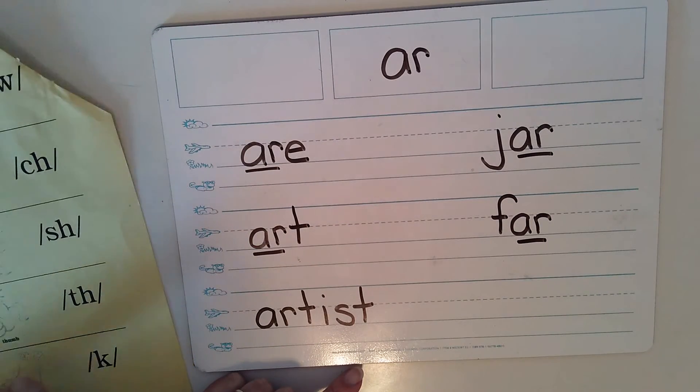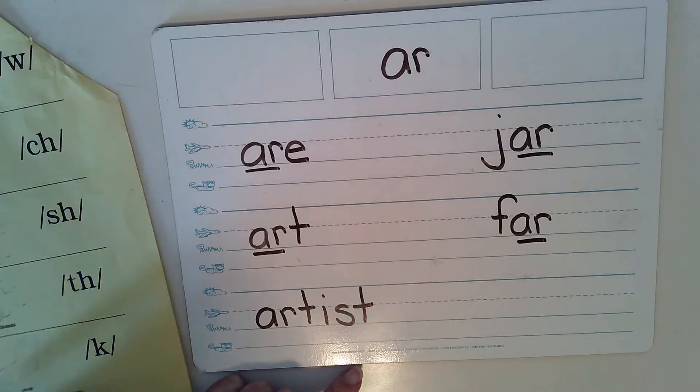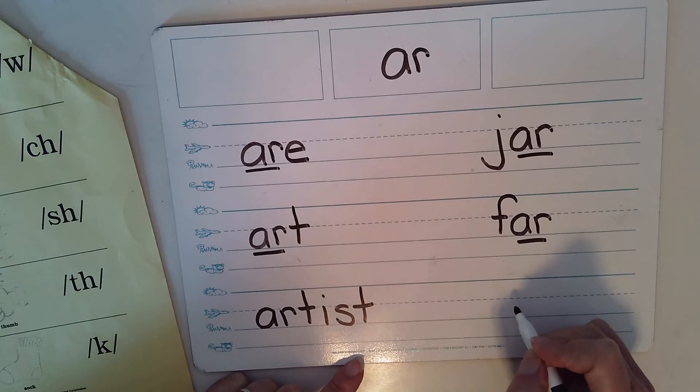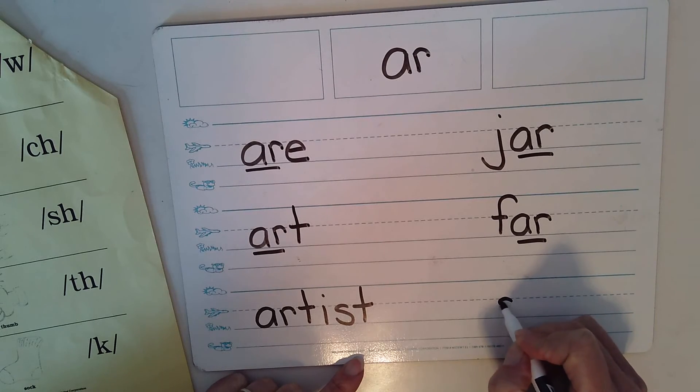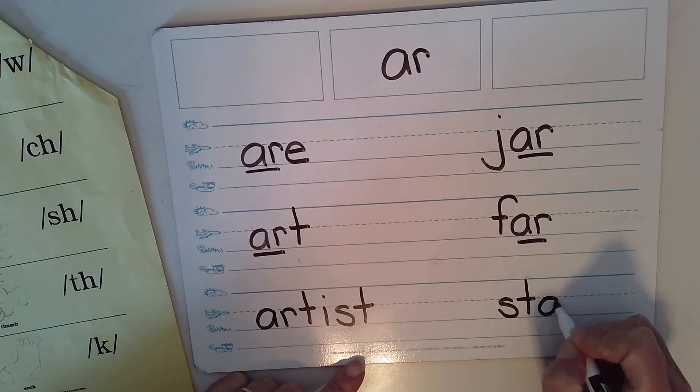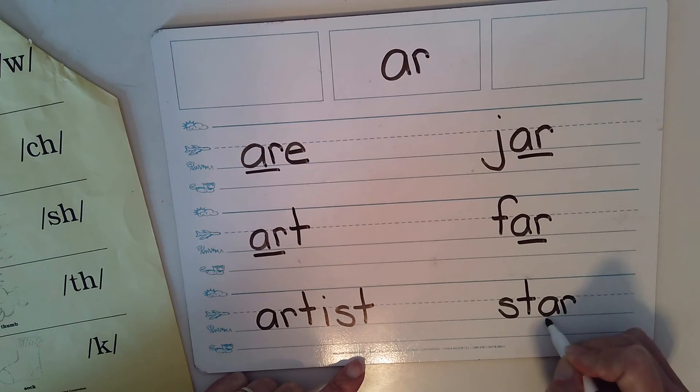And how about star? When we are finished, we can put a star on the top of our board. Star, ST, AR, star. We have a blend at the front and then AR, closed vowel pattern. Star.